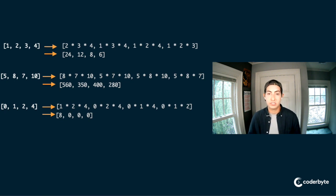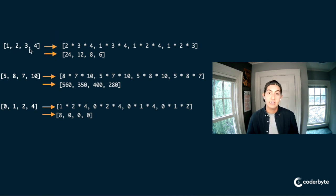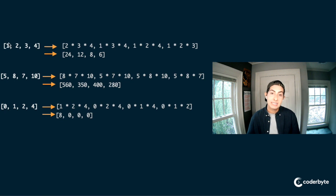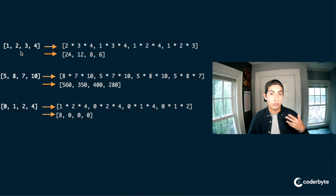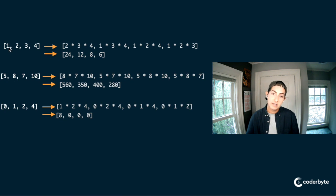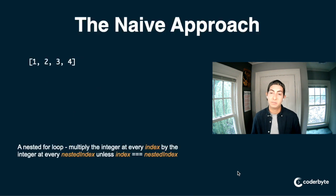So with our brains, what did we do? We went through each index of the array. We basically multiplied all the other integers — we almost maintained a pointer, a reference to the first index, and then we looped over the rest of the array again — kind of like a nested for loop. We added the multiplications each time unless the index of the second for loop was the same as the index of the first for loop. So that would be our naive approach: a nested for loop where the product at each index skips that index.